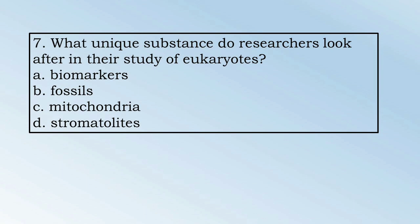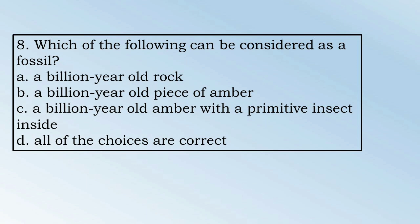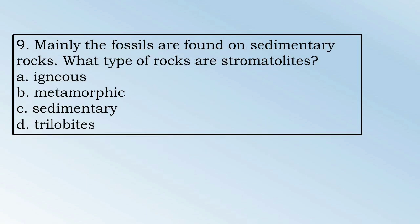Number 8. Which of the following can be considered as a fossil? A. A billion-year-old rock, B. A billion-year-old piece of amber, C. A billion-year-old amber with a primitive insect inside, or D. All the choices are correct. Number 9. Mainly the fossils are found on sedimentary rocks. What type of rocks are stromatolites? A. Igneous, B. Metamorphic, C. Sedimentary, D. Trilobites.